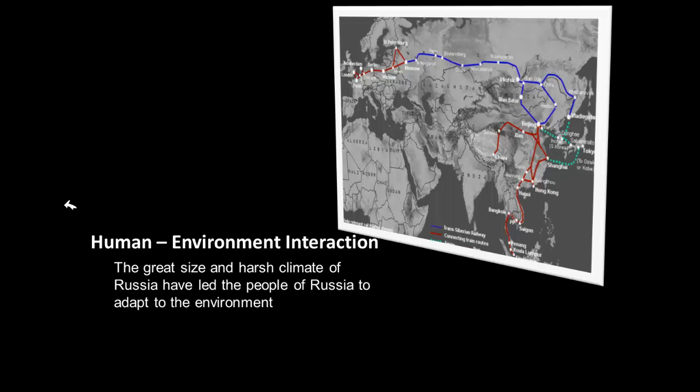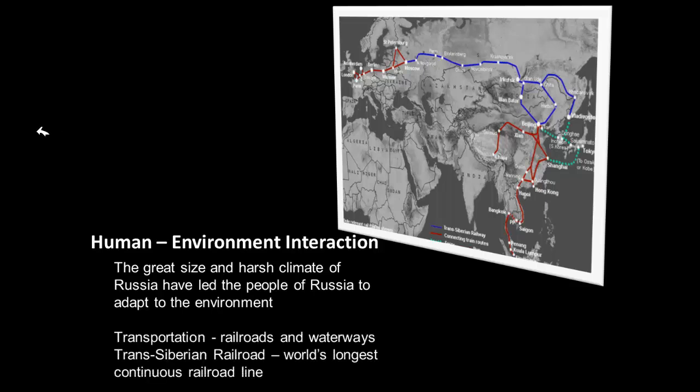Moving to human-environment interaction: due to Russia's great size and harsh climate — the largest country in the world, mostly in Arctic and sub-Arctic zones — the Russian people have had to both adapt to their environment and modify it, meaning they've made changes to themselves and to the environment around them.